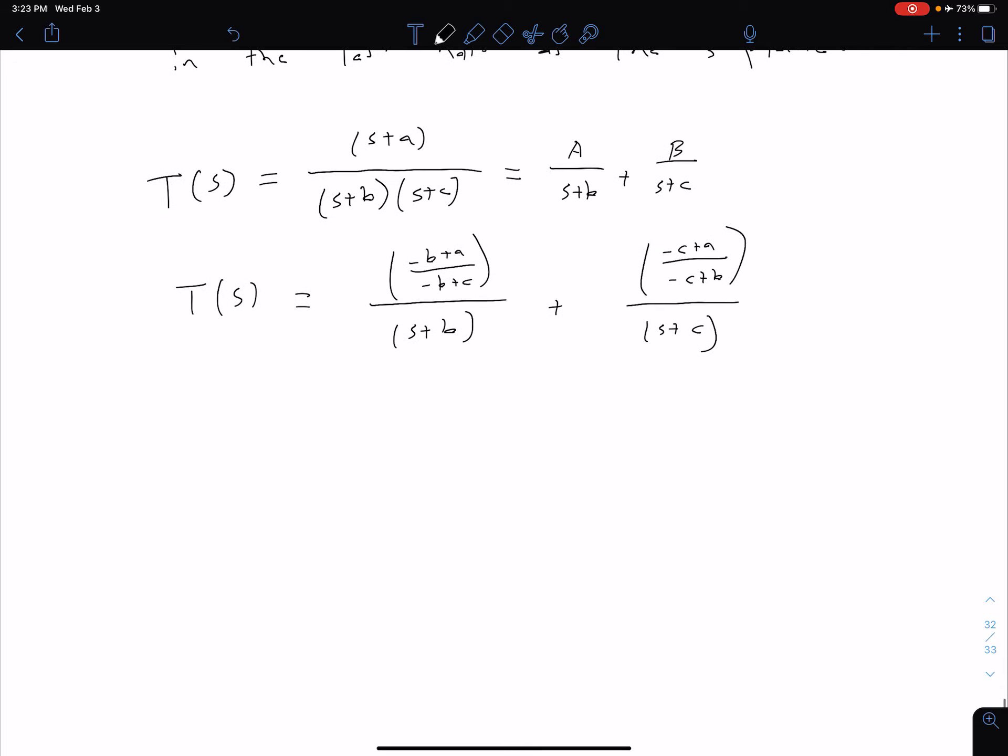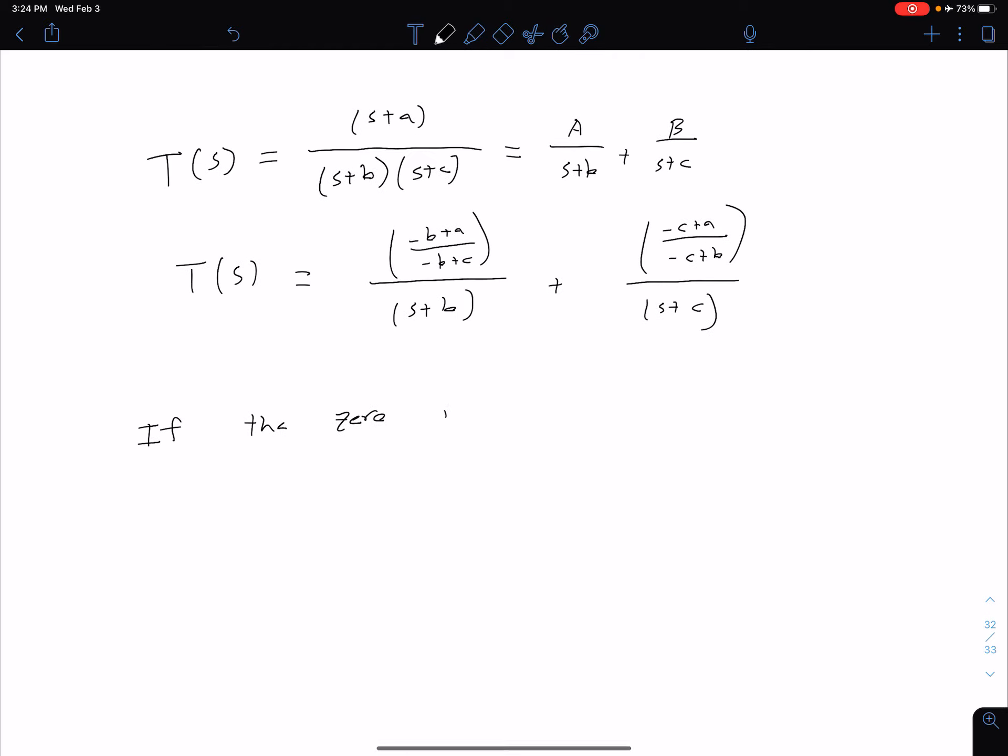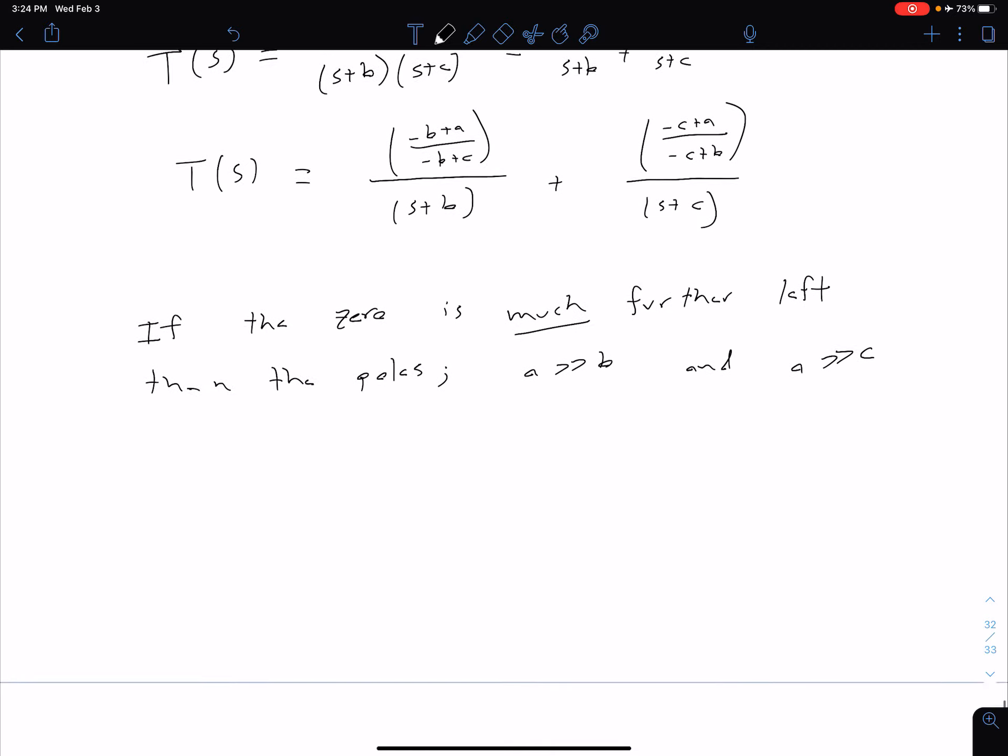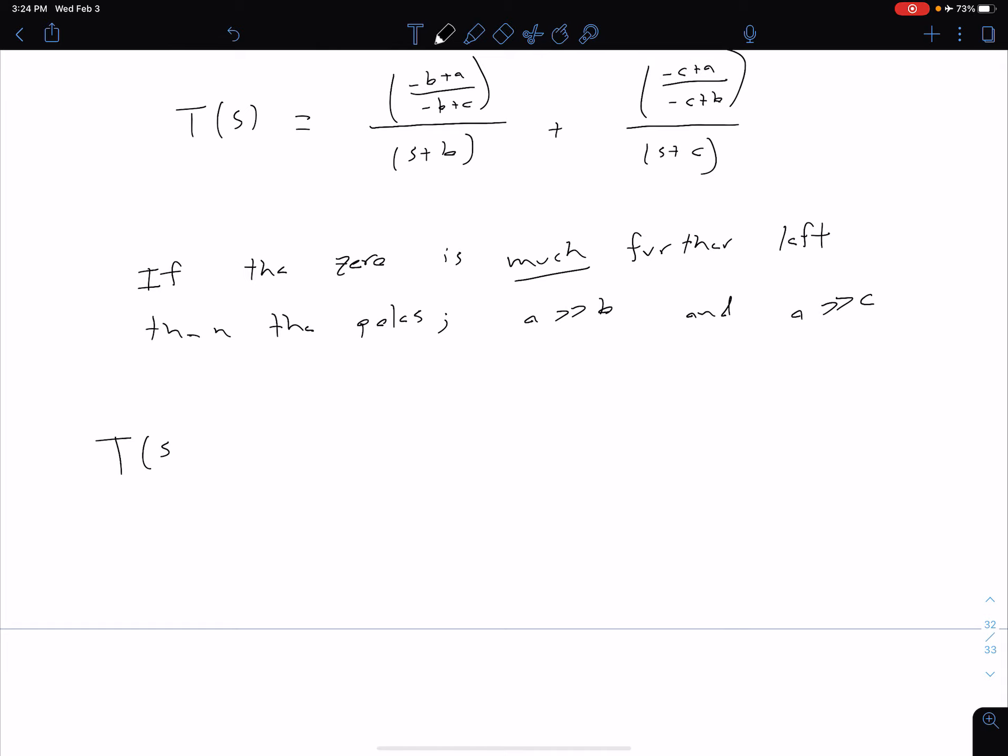So we can make a simplifying assumption. So let's assume that our zero is much further left in our S-plane than either of our two poles. So similar to what we were talking about with adding a third pole, we said if that third pole is really far left, we can kind of ignore it. So we're going to see if that's true for this zero as well. So if the zero is much further left, then either of the poles. And so what that is saying is basically we have then A is going to be much greater than B and A is much greater than C, where B and C are the location of our two poles.